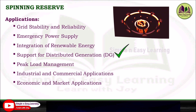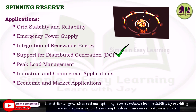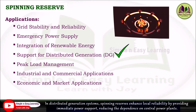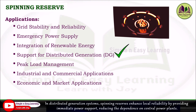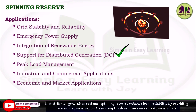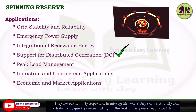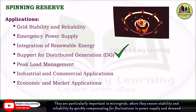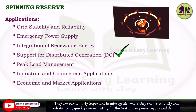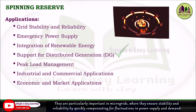The next application is support for distributed generation. In distributed generation systems, spinning reserves enhance local reliability by providing immediate power support, reducing dependency on central power plants. They are particularly important in microgrids, where they ensure stability and reliability by quickly compensating for fluctuations in power supply and demand.